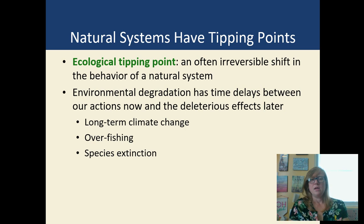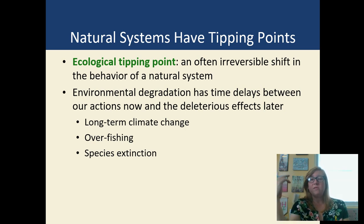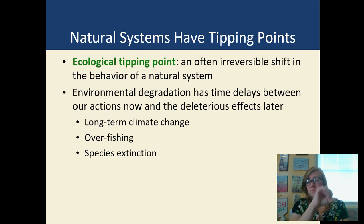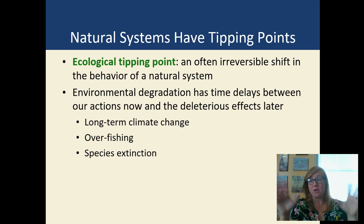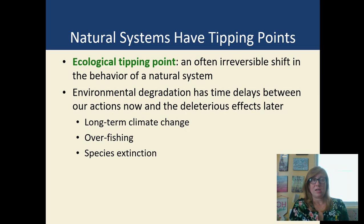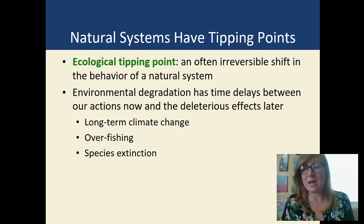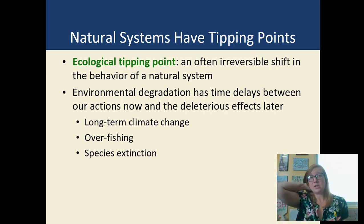Natural systems have tipping points, as I mentioned when we looked at sustainability. An ecological tipping point is an often irreversible shift in the behavior of a natural system. Environmental degradation involves time delays between our actions now and the negative effects later — long-term climate change, overfishing, species extinction. People are fishing, but they don't realize they're removing so many fish that the population will reach a tipping point where it can no longer reproduce enough to recover, even if fishing stopped at that point.